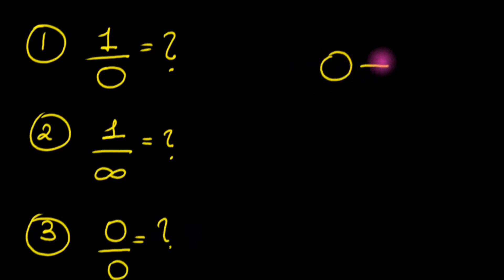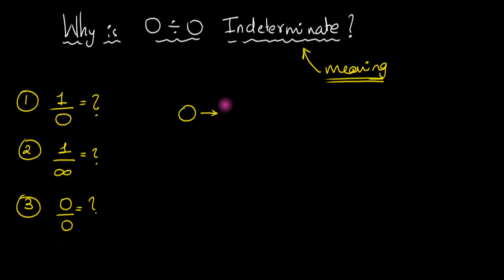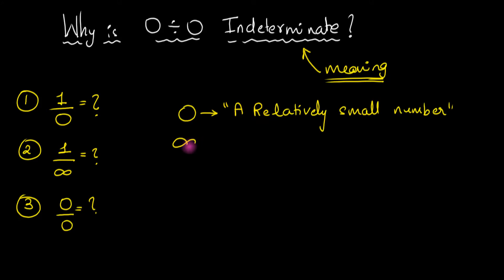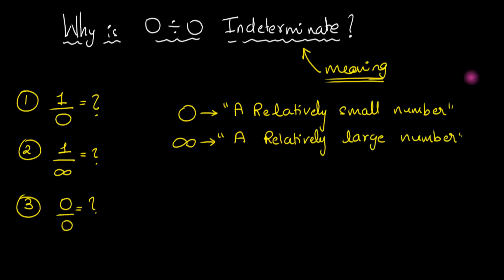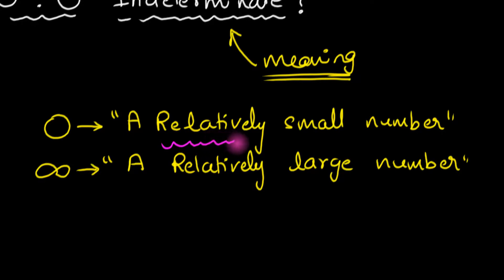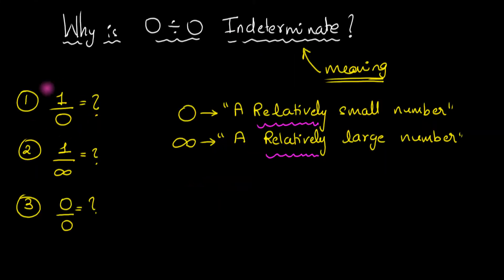Every time I say the word 'zero', I want you to think of it as a relatively small number. Every time I say 'infinity', I want you to imagine a relatively large number. The key word here is 'relatively'. In the first question we are dividing one by zero, so zero represents a number which is much smaller than one.